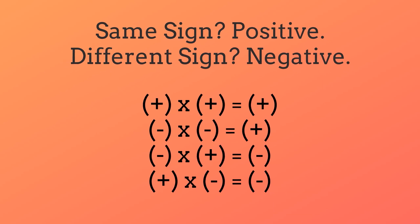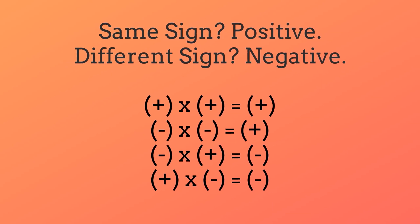If you got the same sign, then your answer will be positive, and if you got different signs, then your answer will be negative. For example, if you had a positive multiplied by a positive, then your end result would be a positive. If you had a negative multiplied by a negative, then your end result would be a positive.